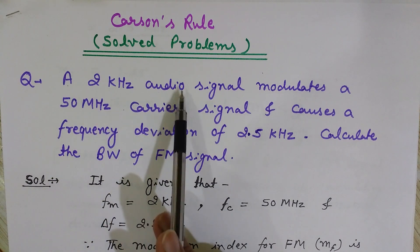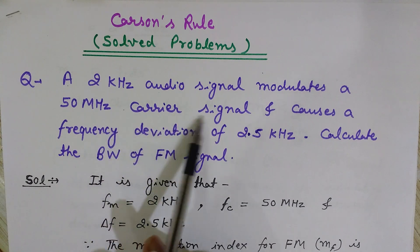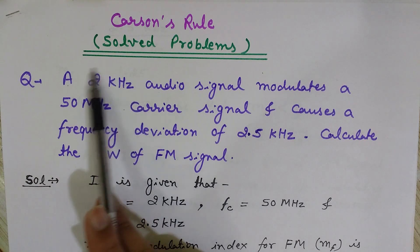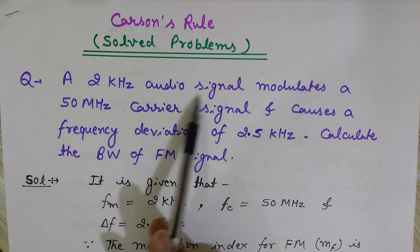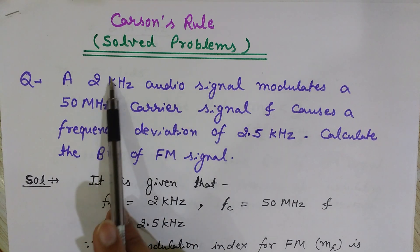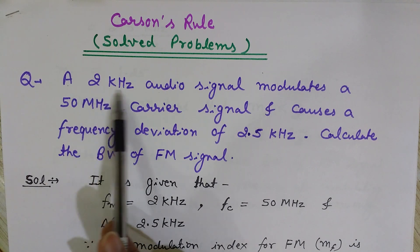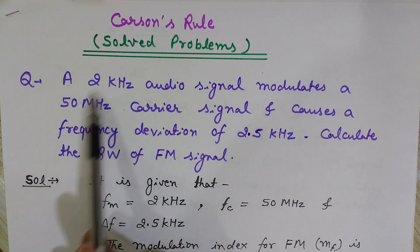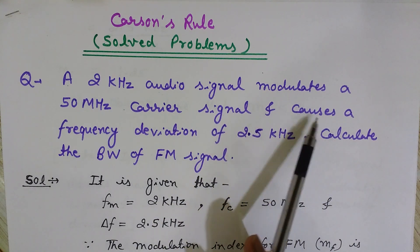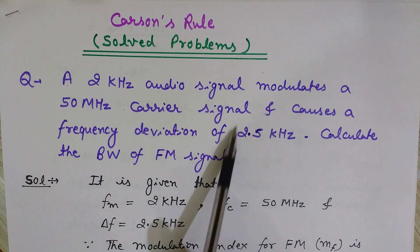The problem is: a 2 kilohertz audio signal modulates a 50 megahertz carrier signal. The 50 MHz is the frequency of the carrier signal and 2 kHz is the frequency of the modulating signal — the message signal in audio form. As we know, the frequency of the carrier wave is always more than the frequency of the modulating signal.